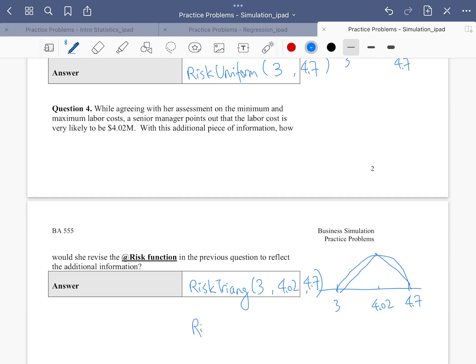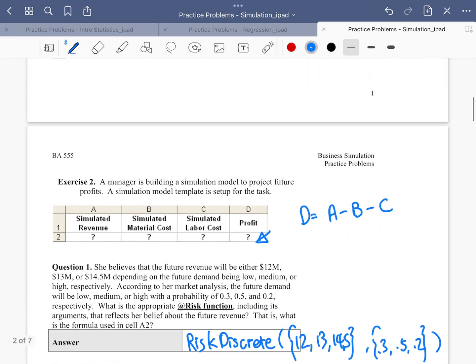Alternatively, you could also use risk pert. Three arguments as well, same as risk triangle.